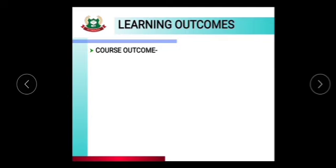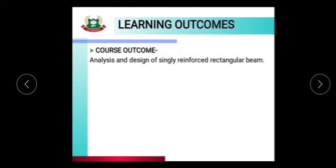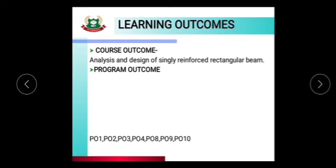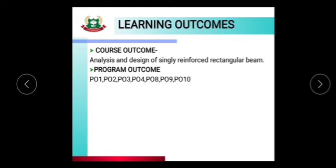First is the course outcome of this particular topic: Analysis and Design of Singly Reinforced Rectangular Beam. Program outcomes are PO1, PO2, PO3, PO4, PO8, PO9, and PO10. PO1 is Basic Knowledge about Analysis and Design of Singly Reinforced Rectangular Beam.